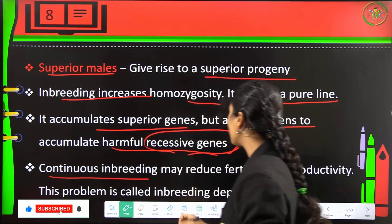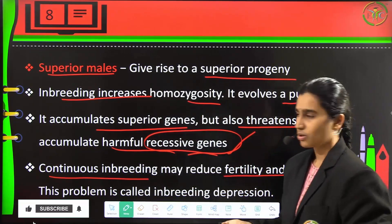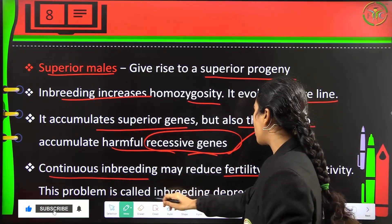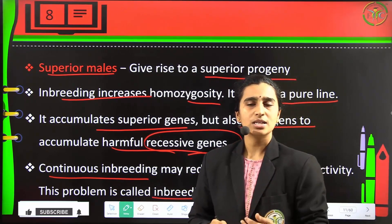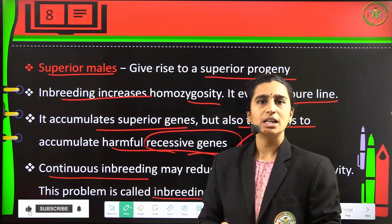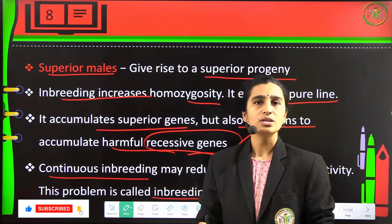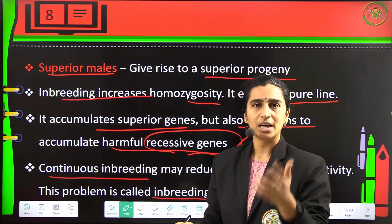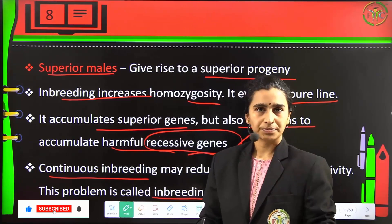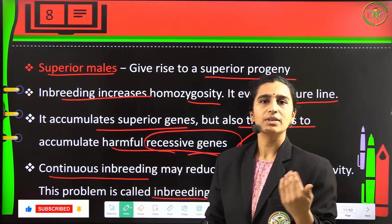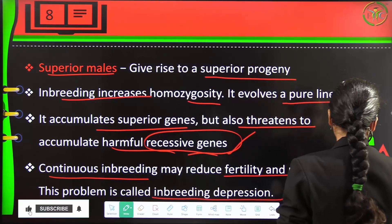Continuous inbreeding will reduce fertility and productivity — a problem called inbreeding depression. Prolonged inbreeding reduces the fertility of that particular breed and also decreases the productivity rate.